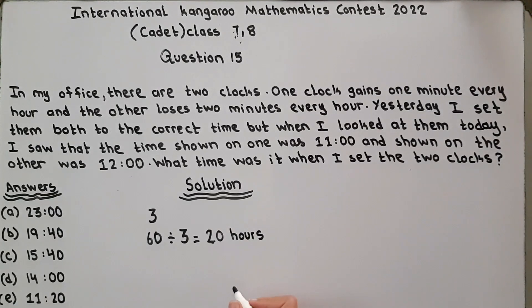So in 20 hours, the clock that gains time will gain 20 minutes, because it gains one minute every hour.